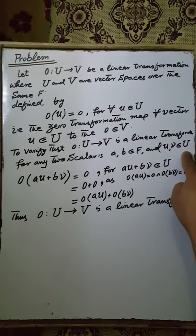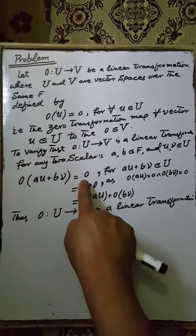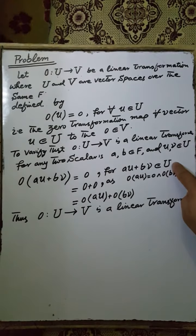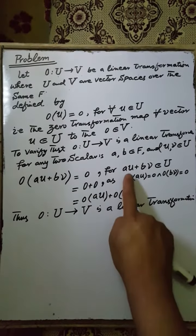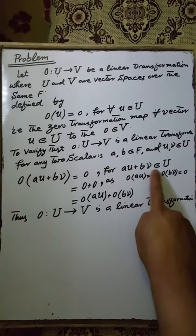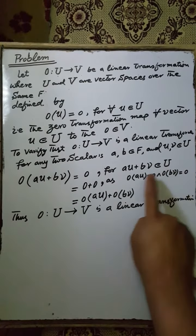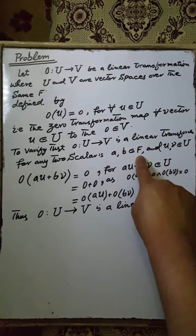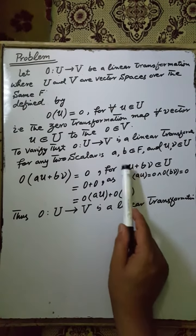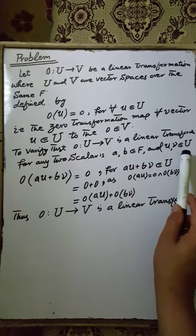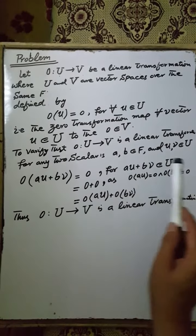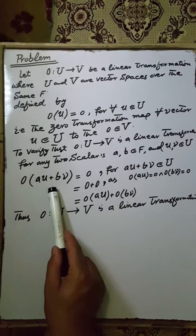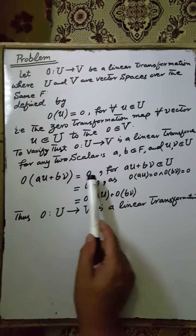of the vector space U, 0(au + bv) equals 0. Since U is a vector space over the field F, any linear combination of elements of U is again an element of U. That is, if u, v are elements of U and a, b are elements of the field F, then the linear combination au + bv is again an element of U, and when we apply the zero mapping on any element of U, this gives the zero vector of the vector space V.